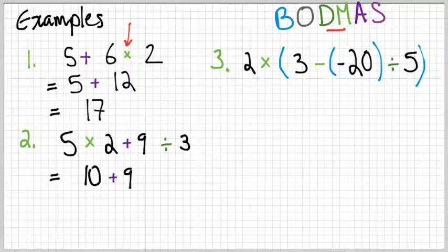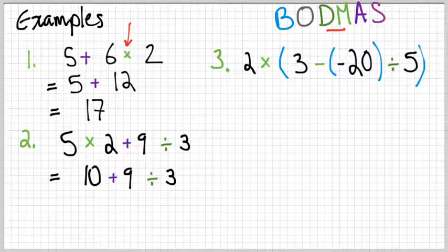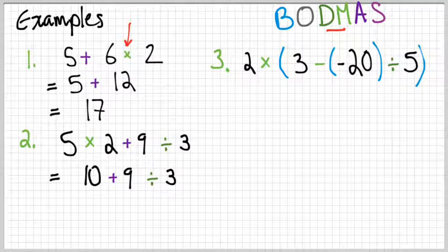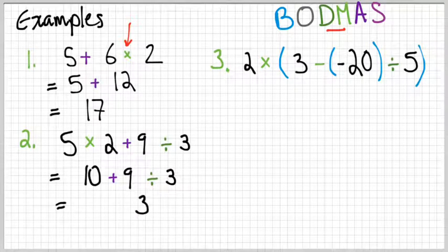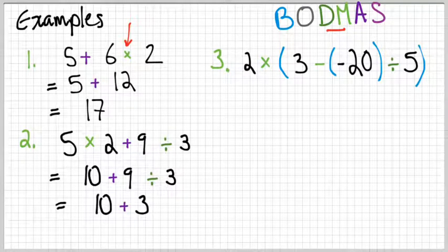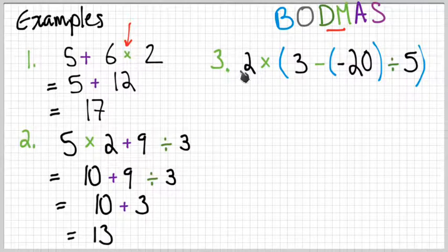Now I'm going to copy the rest of the problem down. So plus 9 ÷ 3. Now we have addition and division. So division comes first. So 9 ÷ 3 is 3. And we'll add our 10 plus. So now we just have 10 + 3, which is 13.